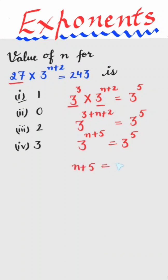n plus 5 is equal to 5, which implies n is equal to 5 minus 5. We get n is equal to 0 as answer. So second is correct.